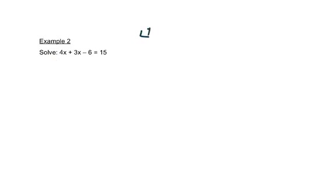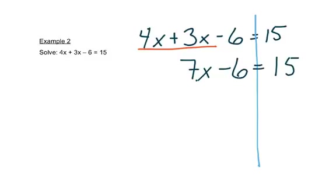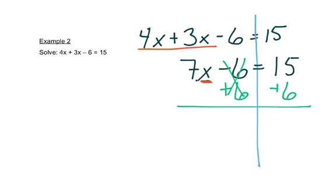So let's look at this problem. We have 4x plus 3x minus 6 equals 15. We're going to draw our line down. Now if we look on the left-hand side, there are some things we can do here — we can put this 4x and that 3x together to make that side shorter. Those are like terms, so 4x plus 3x is 7x. We'll copy the rest of the problem. Now we're ready to start moving things. We have a minus 6, so the first thing we'll do is add 6 to both sides. That leaves 7x on the left, and 15 plus 6 is 21.